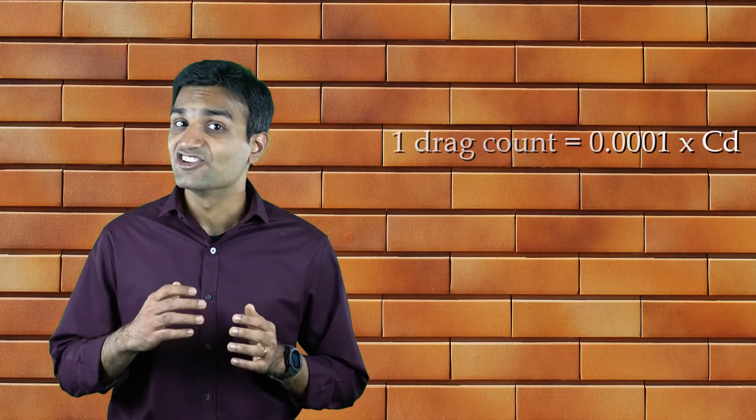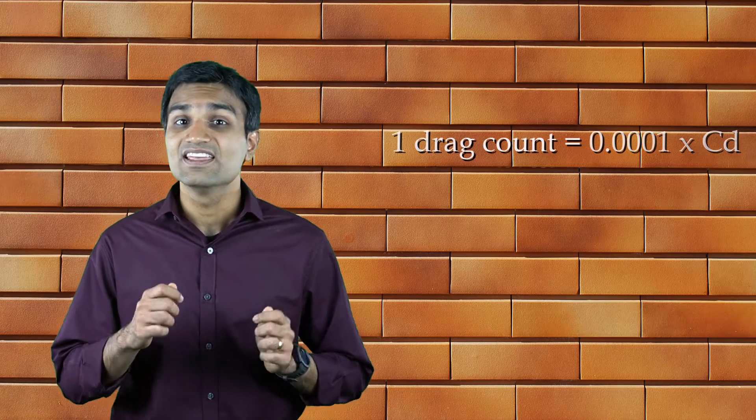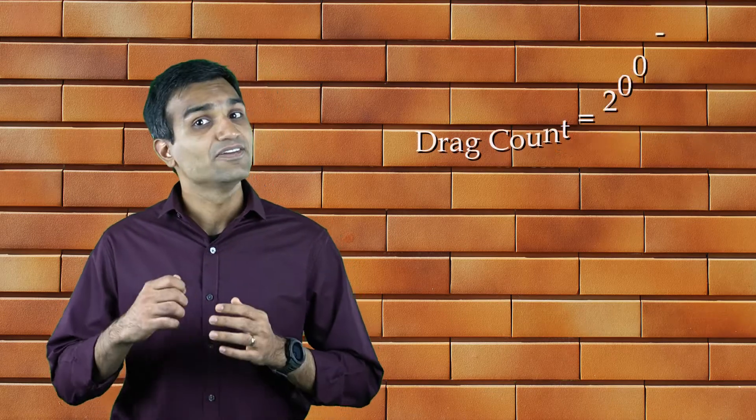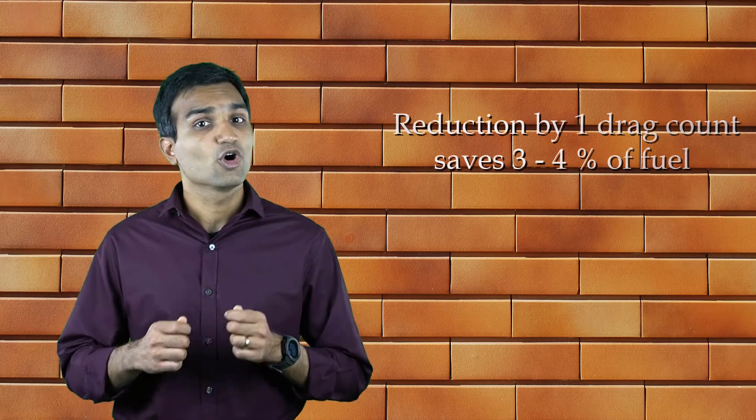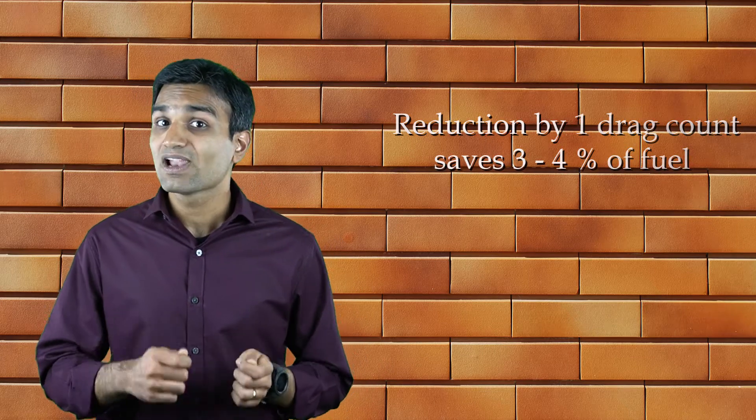Typically, an aircraft drag is measured in drag counts where one drag count is equal to 1e-4 times the drag coefficient. The drag count experienced by a commercial airliner during cruise flight is between 200 and 400. A reduction in drag by one drag count saves 3-4% of aviation fuel to fly the same distance. Imagine how much weight and thus greenhouse emission this could potentially save.